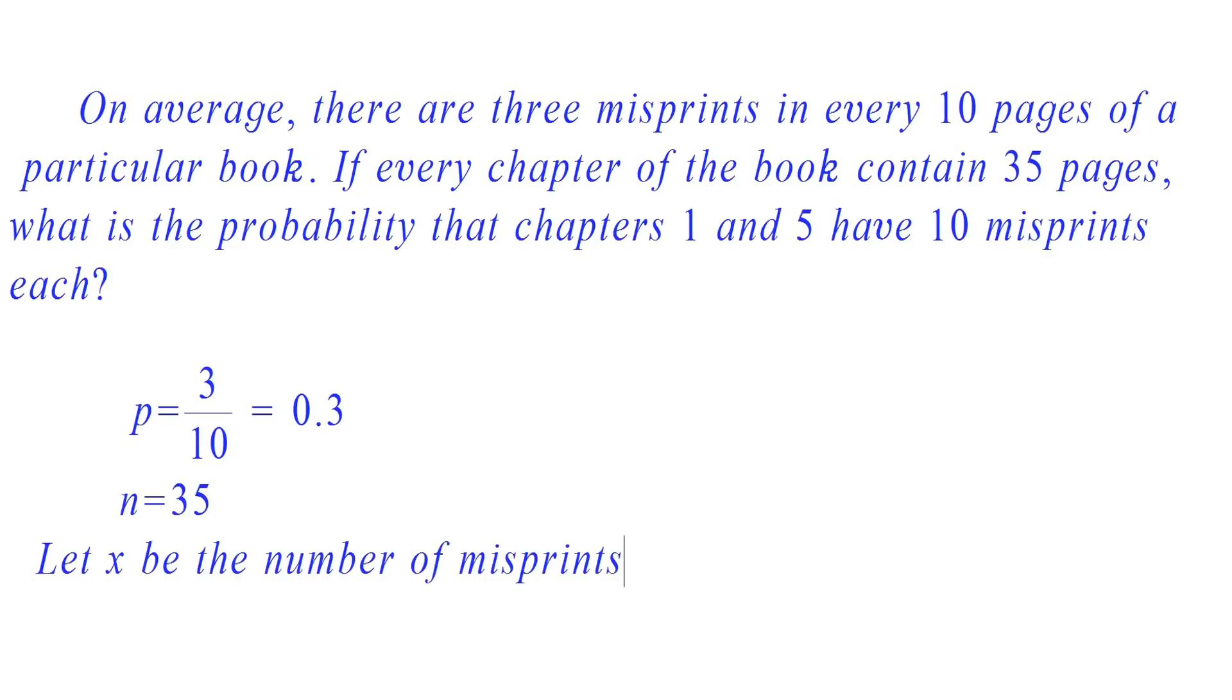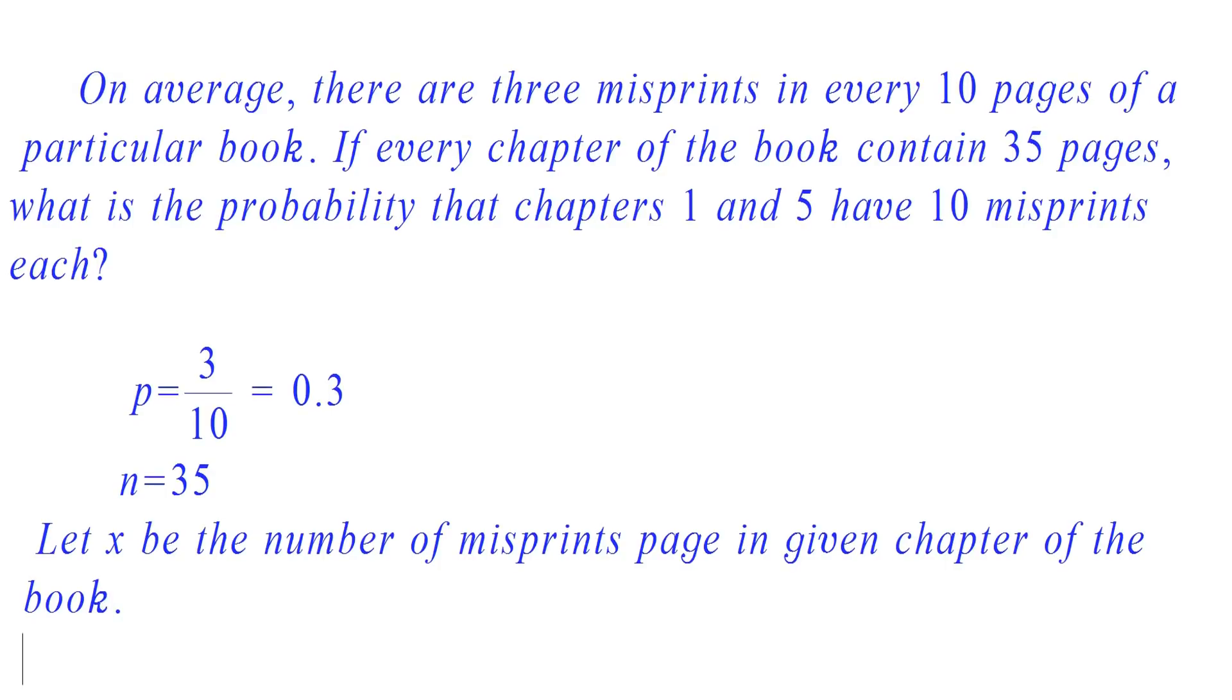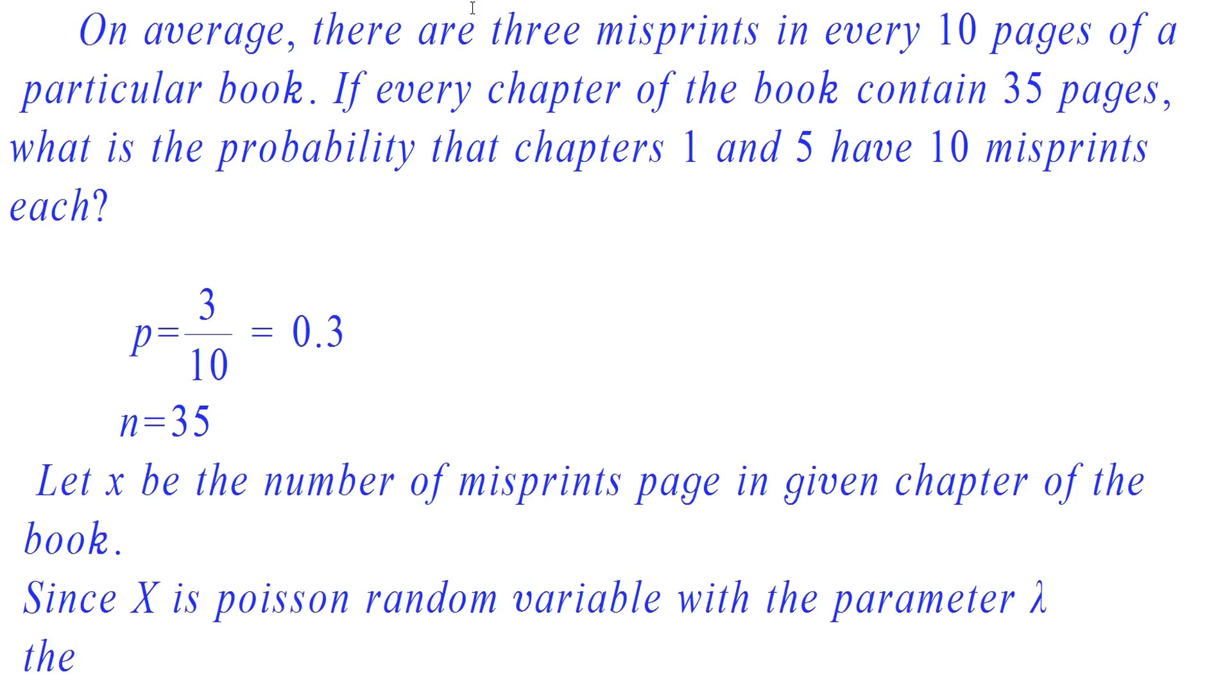Let X be the number of misprints pages in the given chapter of the book. Then mean is equal to lambda. We know that lambda is equal to NP, which is equal to 35 into 0.3, that is equal to 10.5.